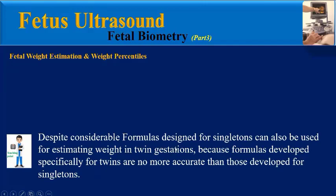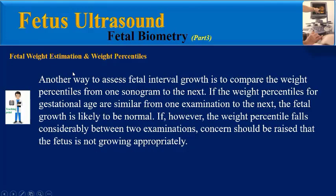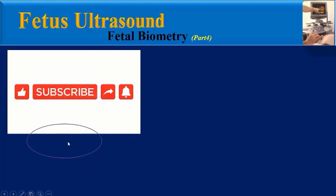Formulas designed for singletons can also be used for estimating weight in twin gestations, as formulas developed specifically for twins are no more accurate. Another way to assess fetal interval growth is to compare weight percentiles from one sonogram to the next. If the weight percentiles for gestational age are similar from one examination to the next, fetal growth is likely normal. If the weight percentile falls considerably between two examinations, concern should be raised that the fetus is not growing appropriately.